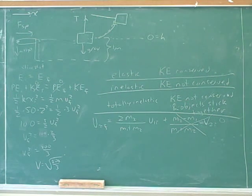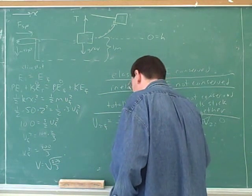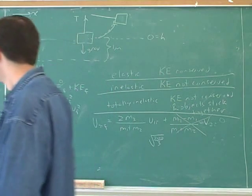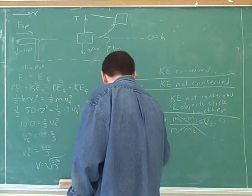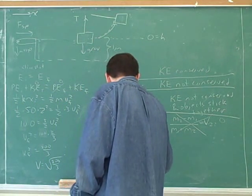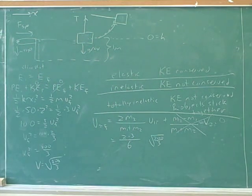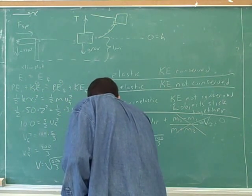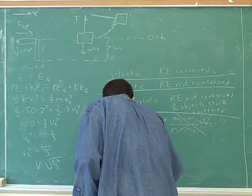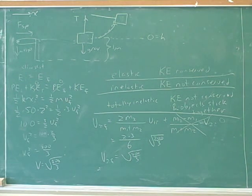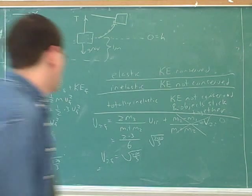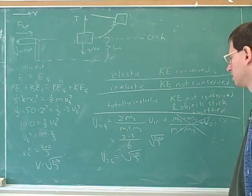So we know the initial velocity of the ball is the root of 209. And the sum of their masses is six. So what's the answer to the question? The final velocity of the target is root 200 over 3 meters per second.